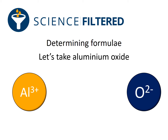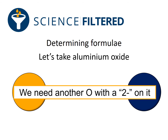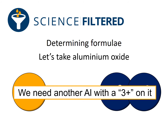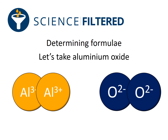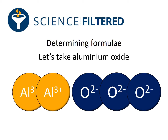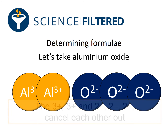In fact, there's more positive charge than negative charge. So I'm going to add another oxygen with a two minus on it. But that still doesn't solve the problem, because now there's more negative charge and less positive charge. So I'm going to add another Al with a three plus on it. Again, they still do not balance.